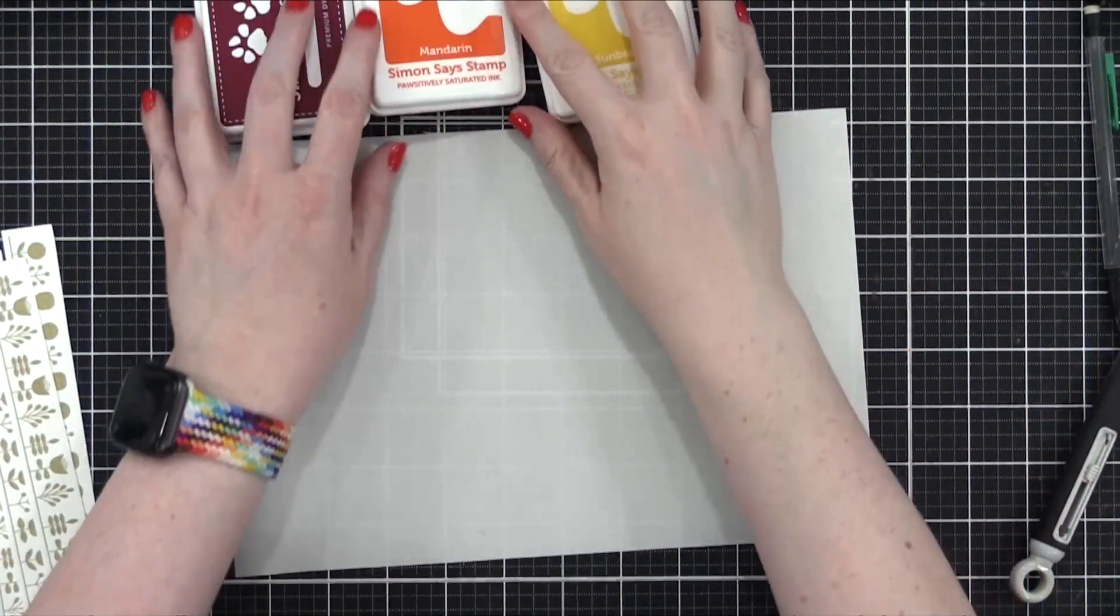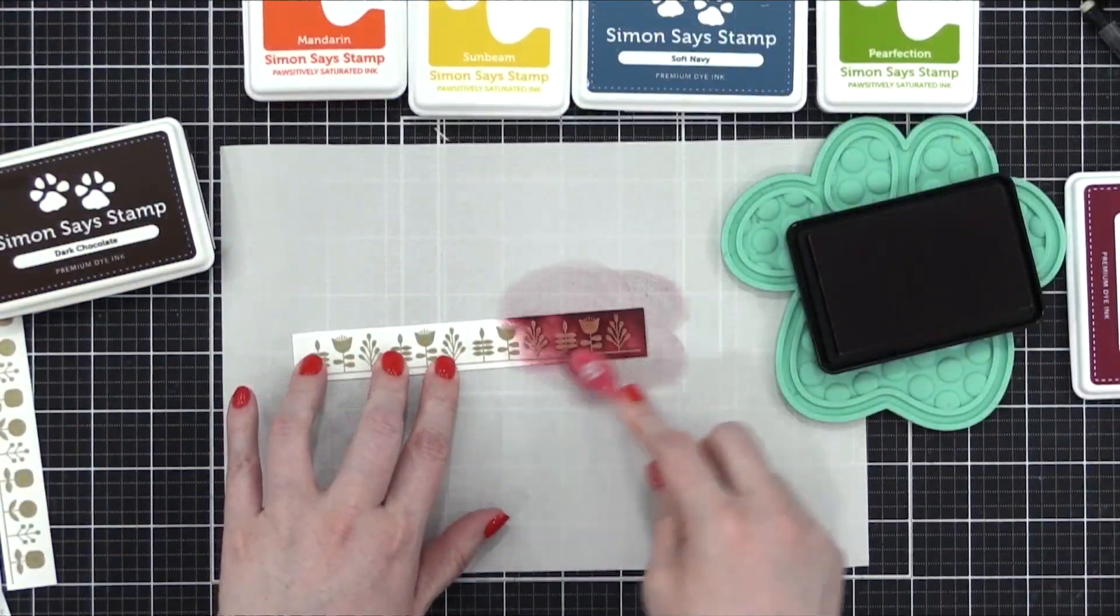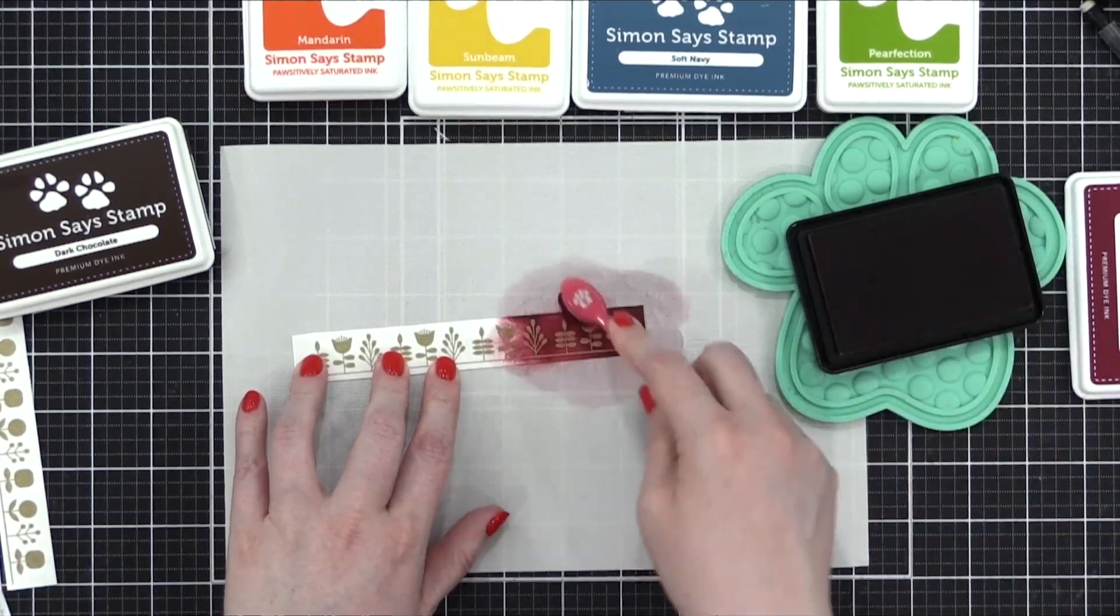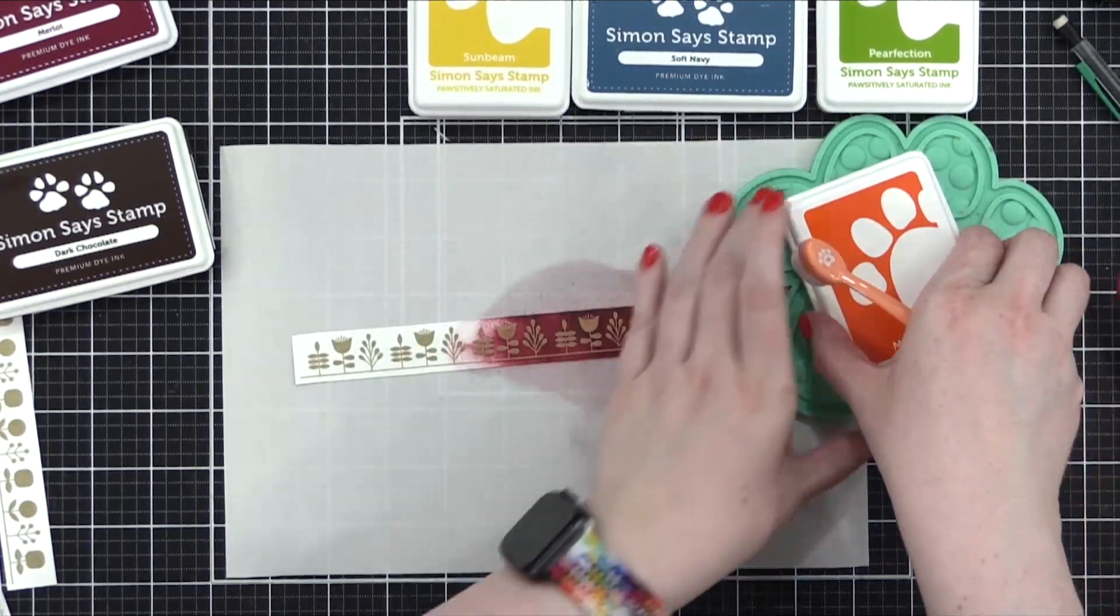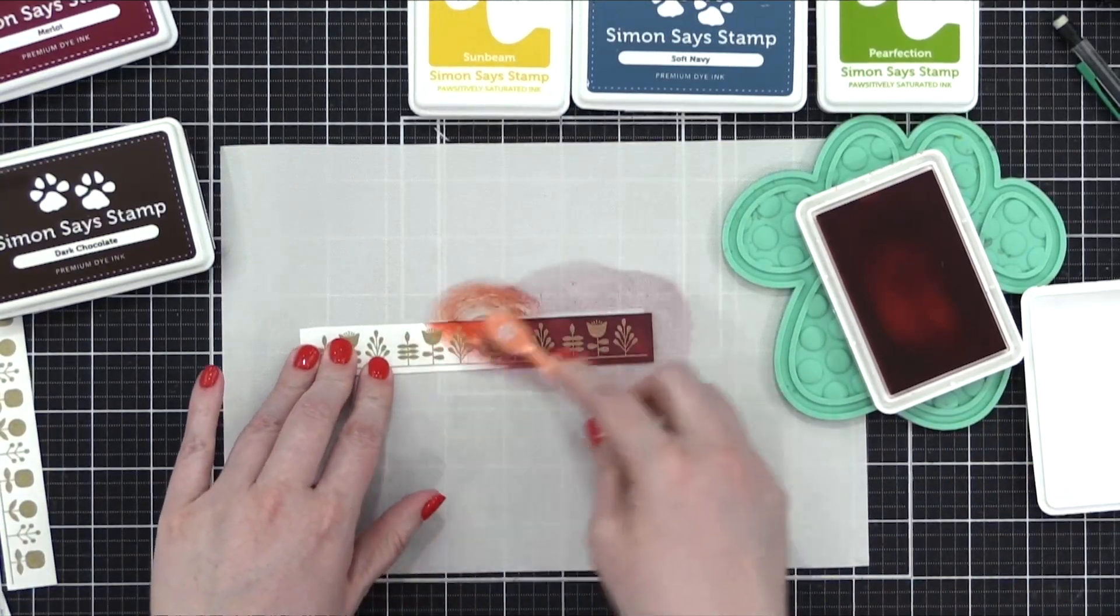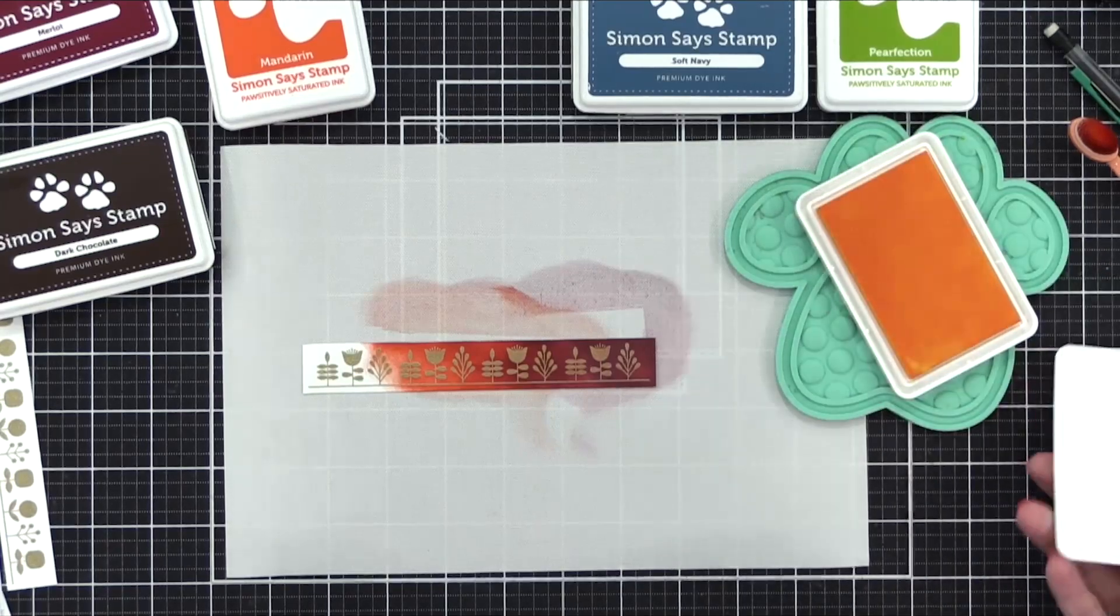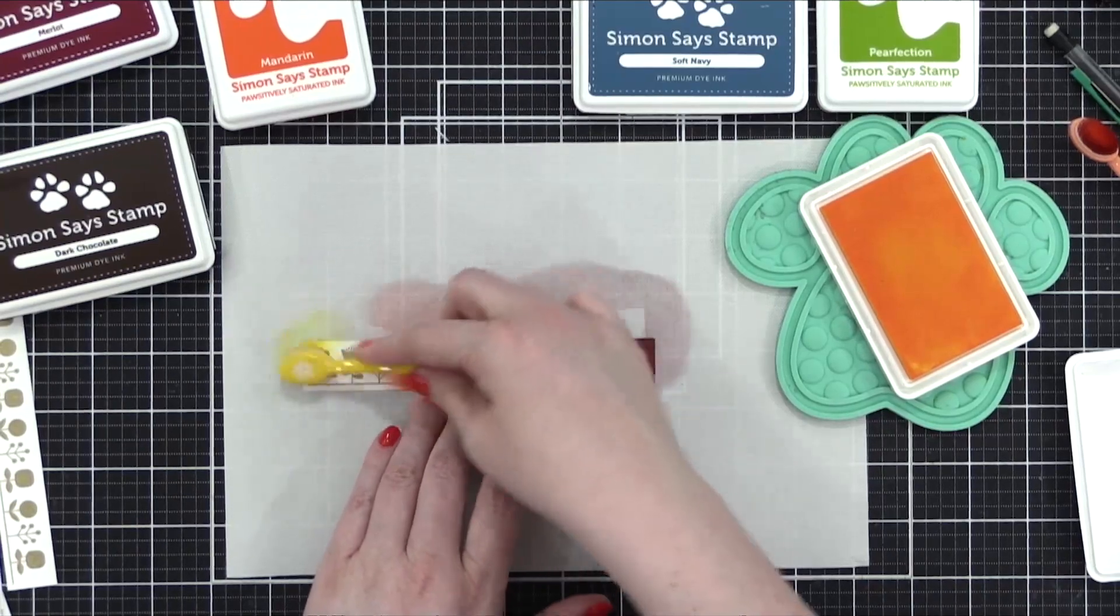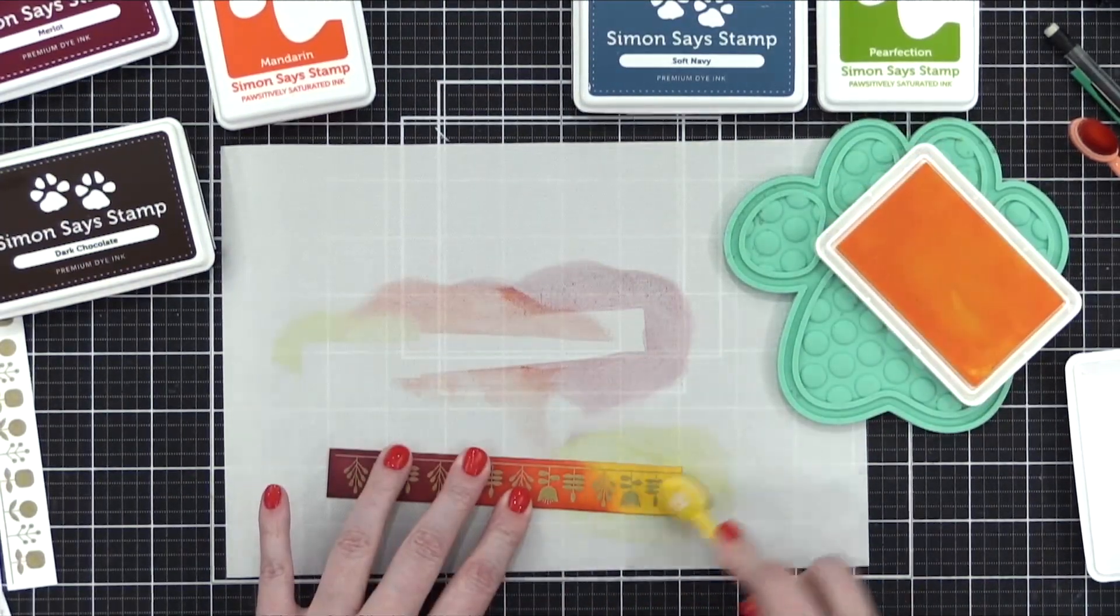I have six different colors of ink from Simon Says Stamp picked out, and I'm starting with the color Merlot, which is a very deep, rich burgundy, the perfect kind of autumn red shade. I followed that with Mandarin and I blended that to the left of the Merlot shade. I'm basically doing a blend of three colors on each strip. This third color is Sunbeam, and I'm using the Simon Says Stamp smaller ink blending brushes.